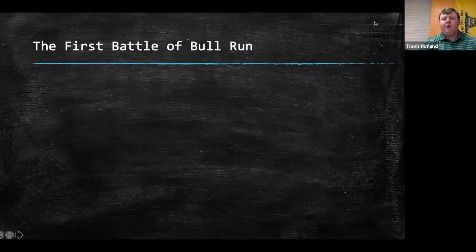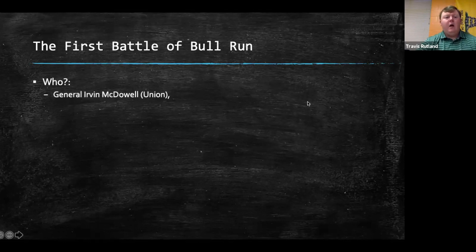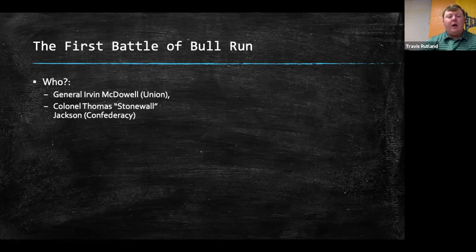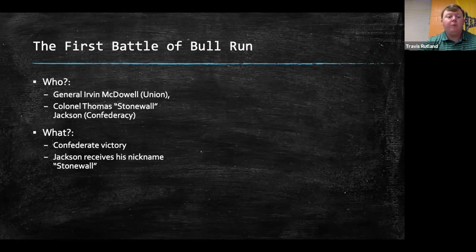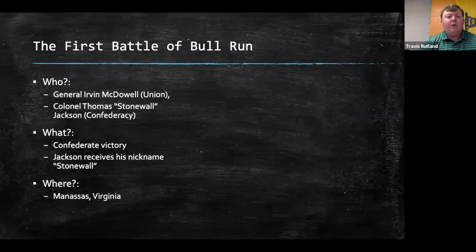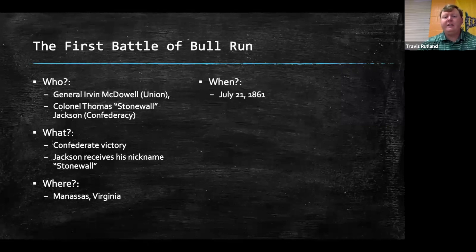We're going to start with the First Battle of Bull Run. Who was involved? We see General Irvin McDowell on the Union side, and Colonel Thomas Stonewall Jackson for the Confederacy. It was a Confederate victory at the First Battle of Bull Run. It's also where Jackson receives his nickname of Stonewall — they say he stood like a stone wall. The First Battle of Bull Run is in Manassas, Virginia, and it takes place on July 21st of 1861.